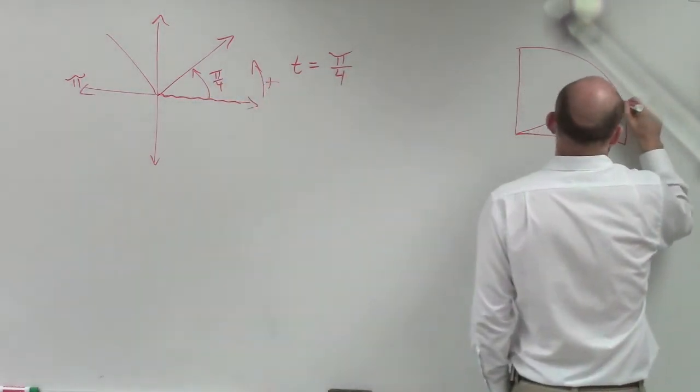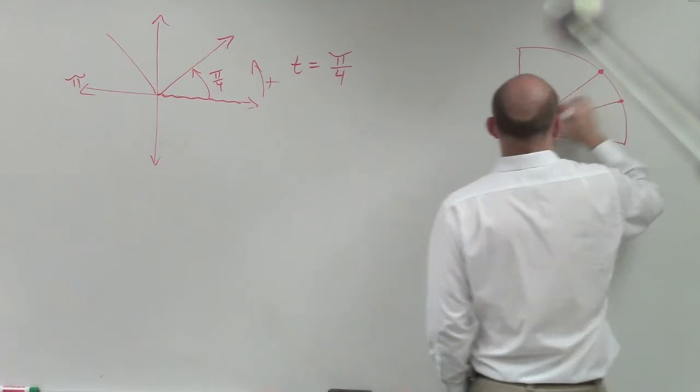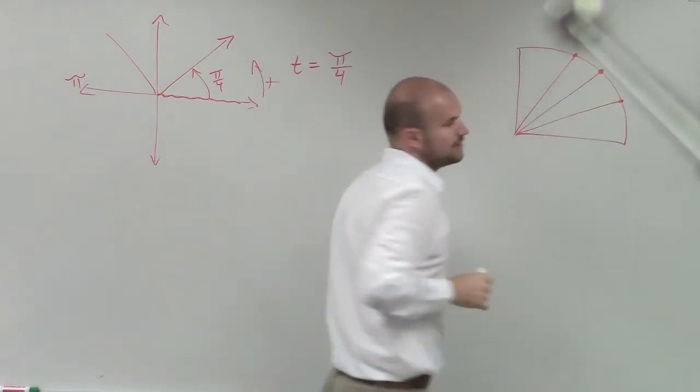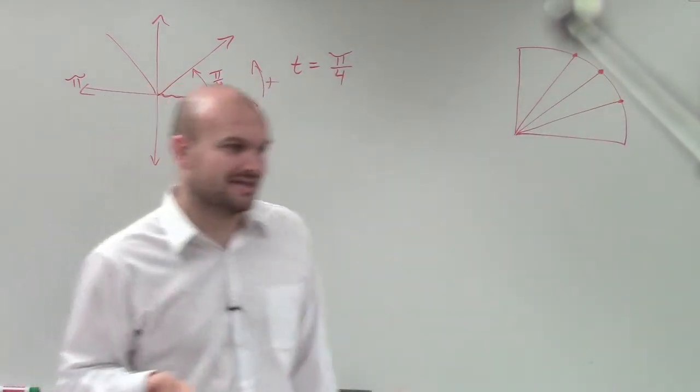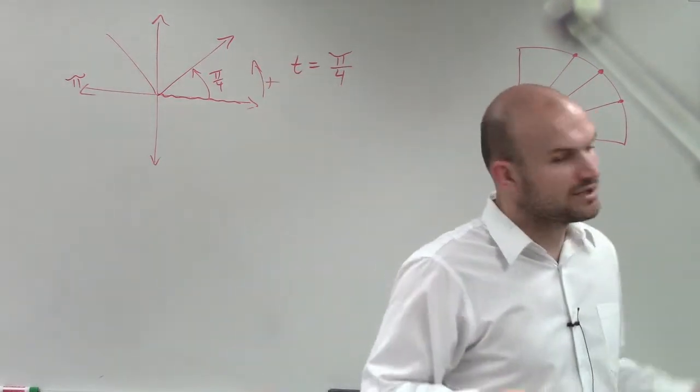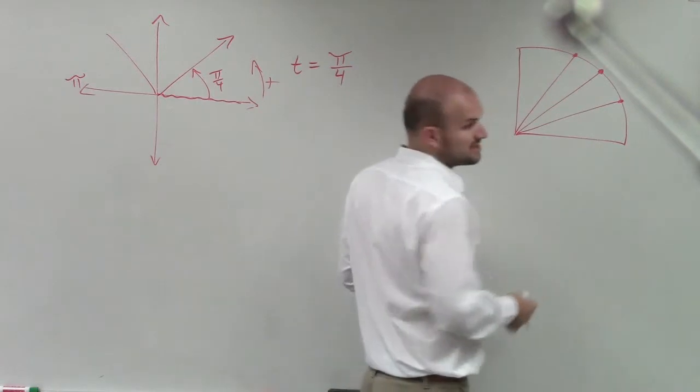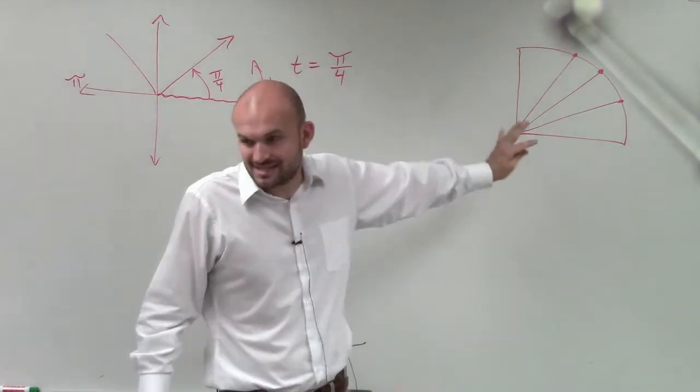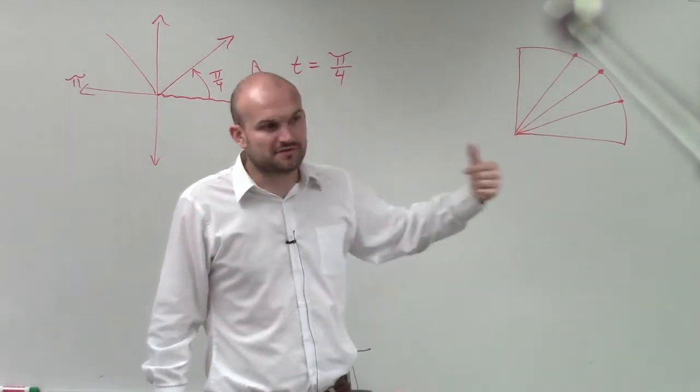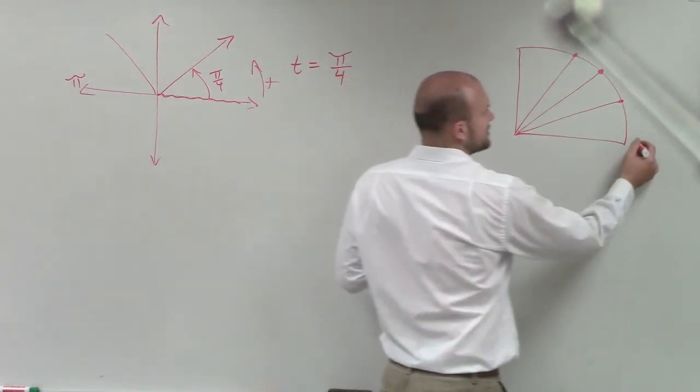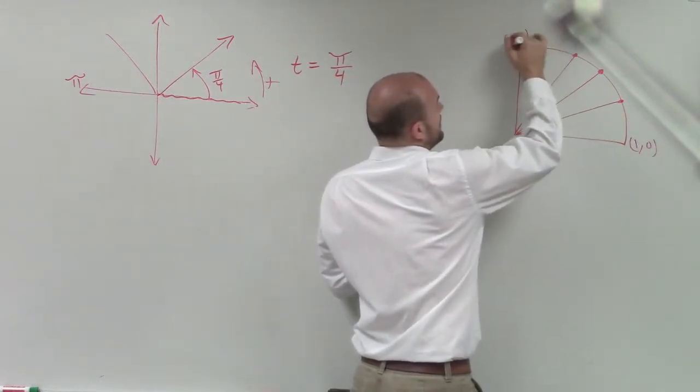So to determine what that point is, we go into our unit circle. And the big thing that I'm really big on in this class is understanding what the first quadrant is, all the points on the unit circle in the first quadrant. Because if you can memorize the first quadrant, you can find the points for the rest of the quadrant. So this point is 1 comma 0, 0 comma 1.